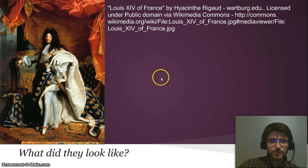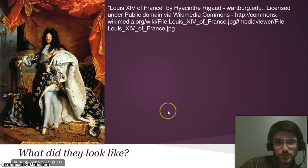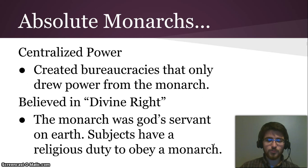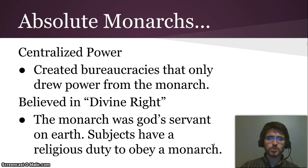What did they look like? Very fancy — that was Louis XIV, with a sword and very plush clothing, probably made from dead animals. Absolute monarchs centralized their power, creating whole departments full of people that just ran the government and drew their power only from the monarch. They weren't independent nobility with lands of their own to raise armies. Absolute monarchs also believed in divine right — the idea that the monarch was God's servant on earth and subjects had a religious duty to obey the monarch.